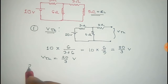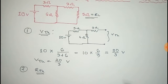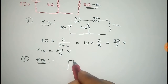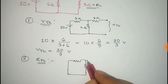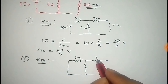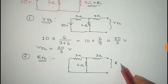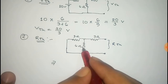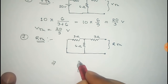Now we have to find the second step, that is to find the Thevenin resistance, RTH. To find the Thevenin resistance, we have to short the voltage source. After shorting this source, the circuit will be like this. The resistance across this terminal is called Thevenin resistance. Now this 3 ohm and 6 ohm are in parallel connection.